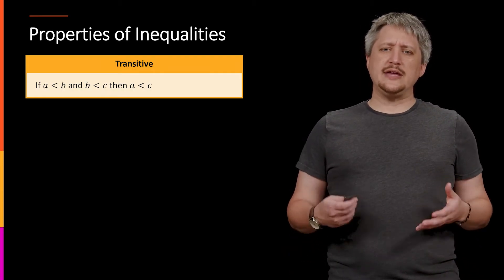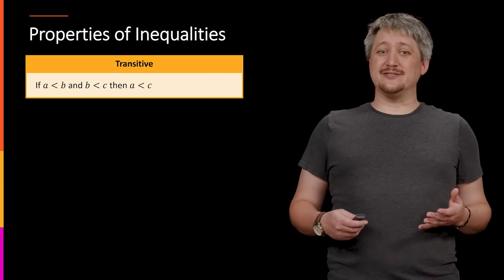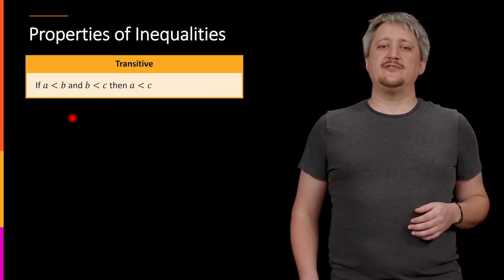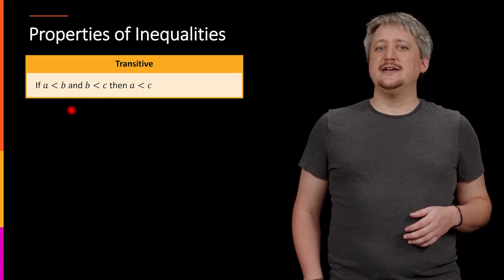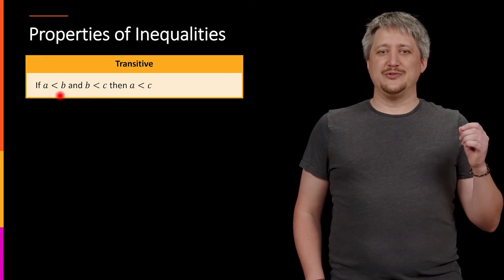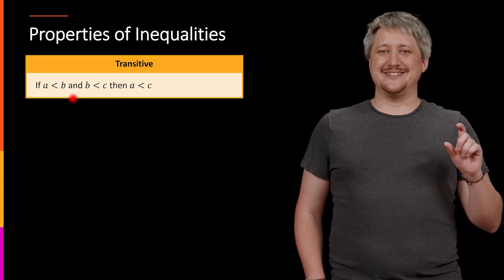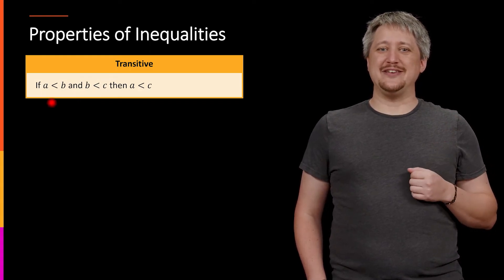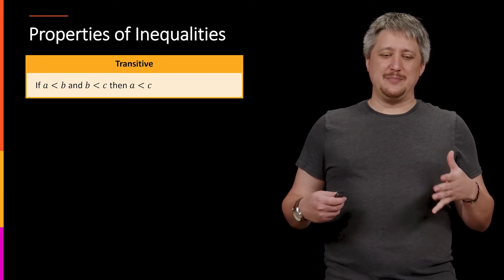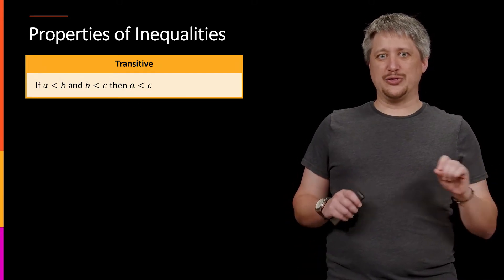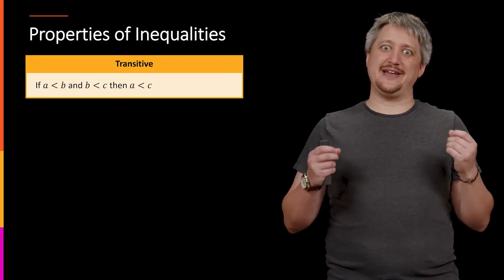First up, inequalities are what we call transitive, which means that if we have some relationship like a is less than b and b is less than c, then that means that you can use that b as an anchor middle and relate the other two pieces. So in this case, a is less than c. Basically the idea is that you can move through b to get to c and relate a and c together.